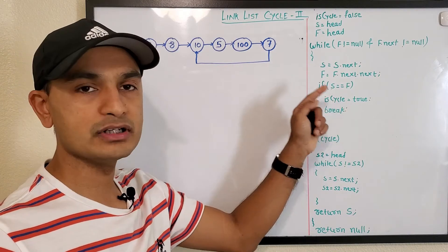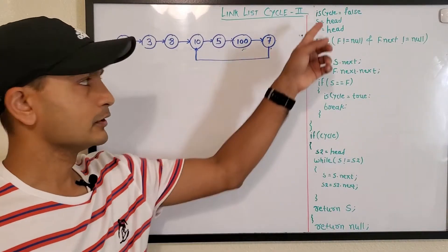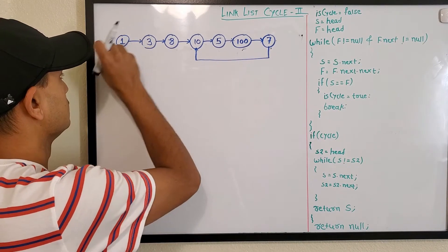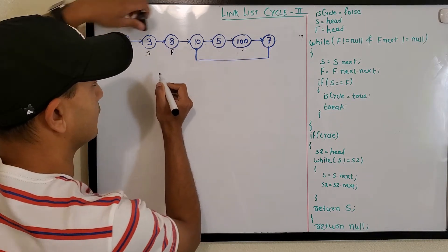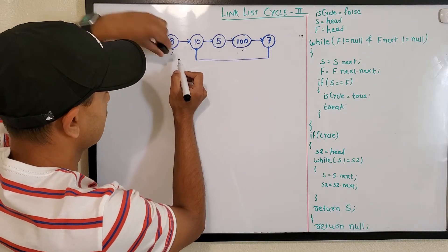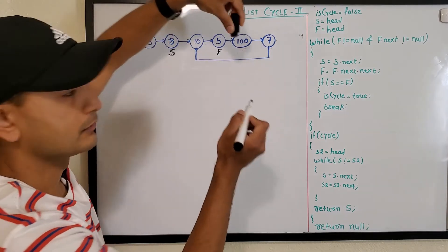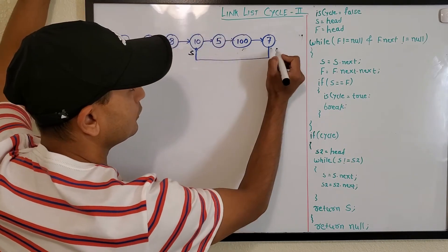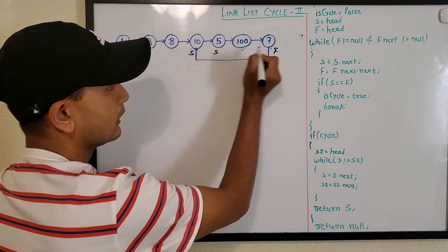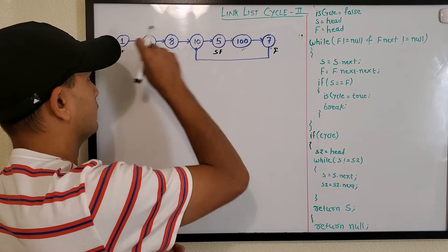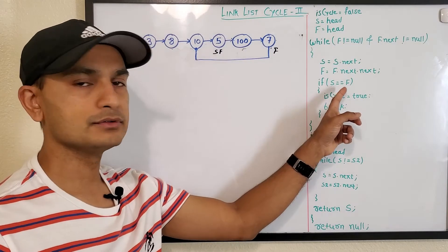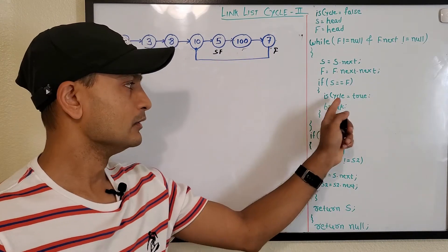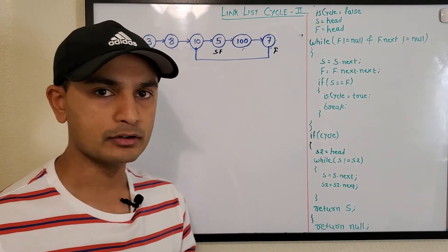Let's see how we reach the second condition. We start with slow and fast both at head. Slow will move one step, fast will move two steps. Then slow moves one more step, fast moves two more steps. Continuing this way, slow and fast eventually meet at the same node. At that point we confirm there is a cycle, set a cycle flag to true, and break out of the loop.